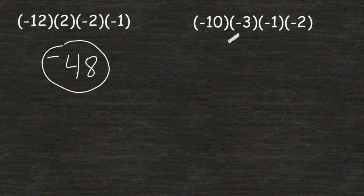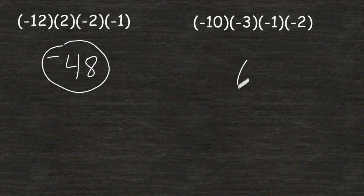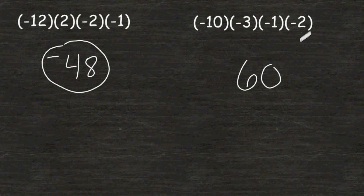Now for this example, we have 10 times 3, which is 30, 30 times 1 is also 30, and 30 times 2 is 60. And we have four negatives within the problem, which is an even number, which means our answer is going to be positive.